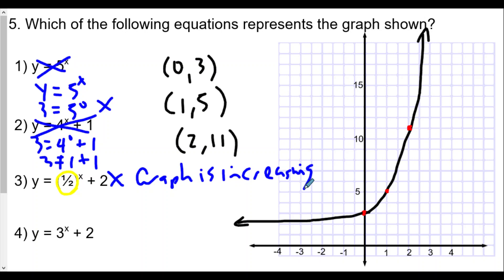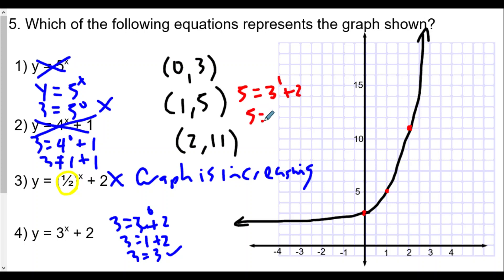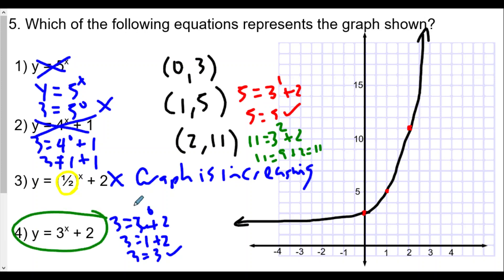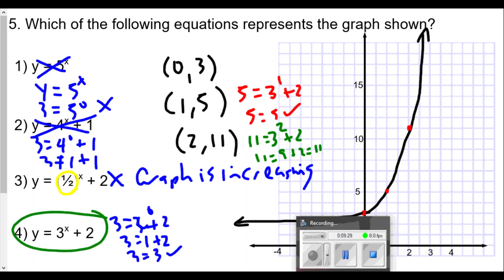For the last choice, let's test the coordinates. Does 3 = 3^0 + 2? 1 + 2 = 3 — yes, that works. Does 5 = 3^1 + 2? 3 + 2 = 5 — check. Does 11 = 3^2 + 2? 9 + 2 = 11 — yes! All three coordinates satisfy this equation, so choice four is the correct answer for number five.